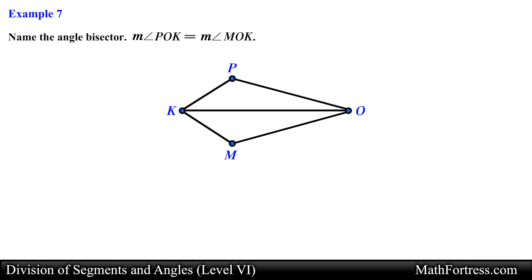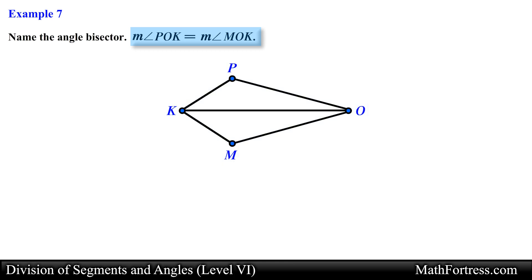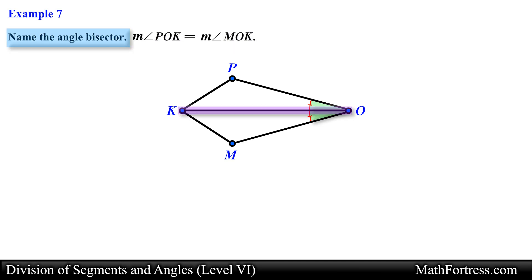Name the angle bisector — the measure of angle POK is equal to the measure of angle MOK. In this problem we are provided with a diagram and are asked to determine the angle bisector given that the measurement of angle POK equals the measurement of angle MOK. Recall that if two angles have the same measurement then they are congruent. We show this on the diagram by drawing single arc marks for each angle. The ray that bisects these two angles is Ray OK, and this is our final answer.